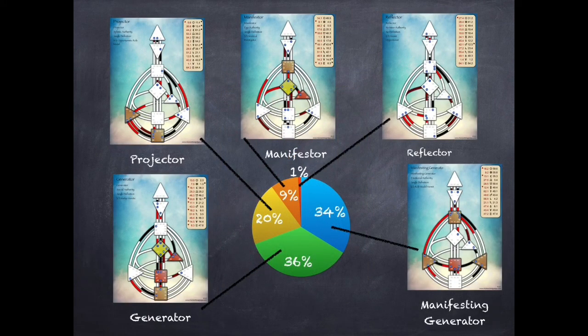I've already done a video with a brief description of the different human design energy types. So today, we're going to talk about the manifesting generator. But before we do, I just want to do a very quick overview of the energy types. So everybody in the world is one of these five energy types. The rarest of these types is the reflector. And then after that would be the manifester, then the projector, and then the generators are almost equal in how common they are. And if you add the two generator types together, they make about 70% of the population.